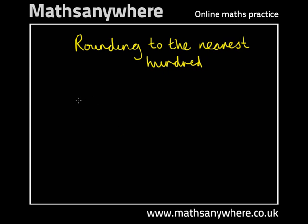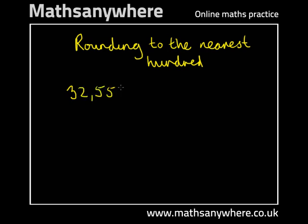Rounding to the nearest hundred, let's look at an example. Take 32,558.